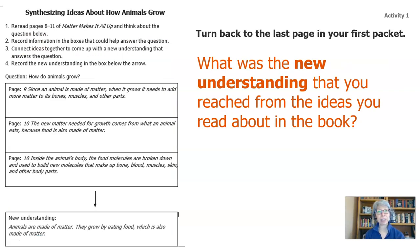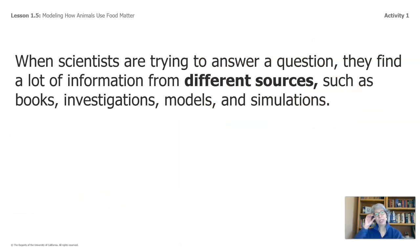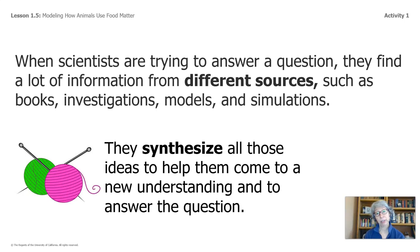If you have that last packet, go back to that page. If you don't, you can just follow along. What was the new understanding that you reached from the ideas in the book? Some of you said animals are made of matter and they grow by eating food, which is also made of matter. When scientists are trying to answer a question, they find information from different sources such as books, investigations, models, and simulations, and they synthesize all those ideas to come to a new understanding and to answer the question they're seeking.